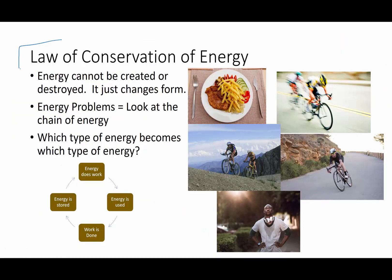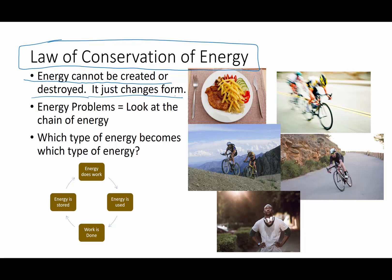Now one of the big laws of nature is the law of conservation of energy. It says that energy cannot be created or destroyed — it just changes forms, going from one form to another. When we start getting into our energy math problems, one of the things you have to look at is that chain of energy: what kind of energy did you start with, and what other forms did that energy become? There's always some sort of work that's done, energy is stored, that energy can then do work on something else, and that energy gets used up. There's a big cycle of energy constantly changing from one form to another.